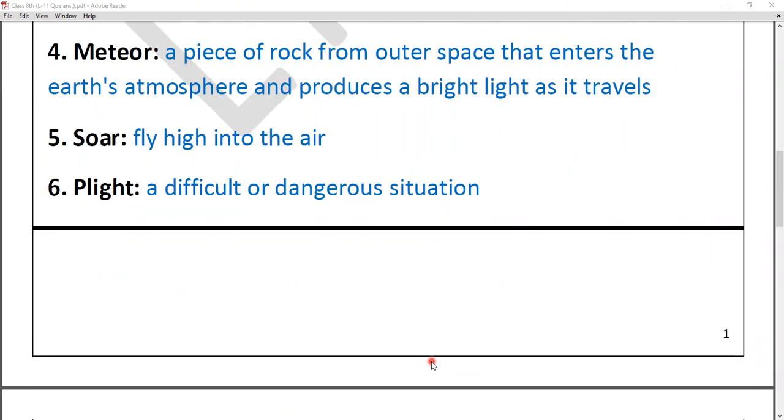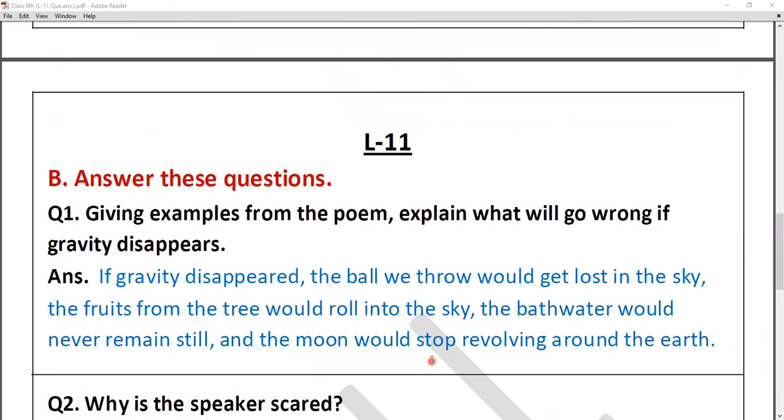Let's do question answers. Giving examples from the poem, explain what will go wrong if gravity disappears. Okay, now what we need to do over here, we have to give examples and explain what will go wrong. So, the answer is like this.